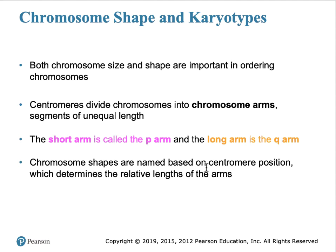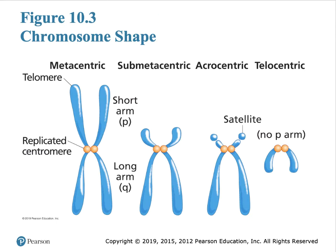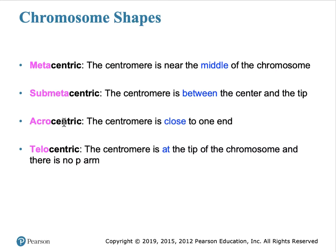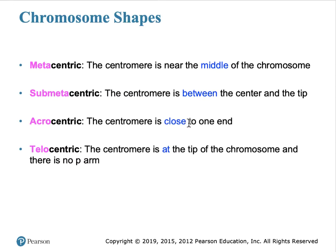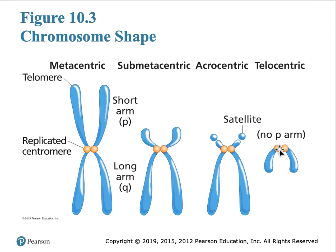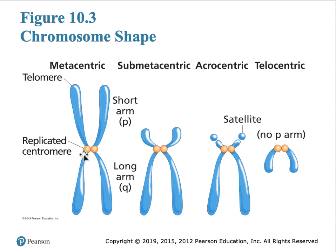Chromosome shapes are named based on centromere position—there are four names to learn. Metacentric means the centromere is near the middle of the chromosome. Submetacentric means the centromere is somewhere between the center and one tip. Acrocentric means the centromere is close to the end. And telecentric means the P-arm is very short and hard to see, as the centromere is very close to the end.